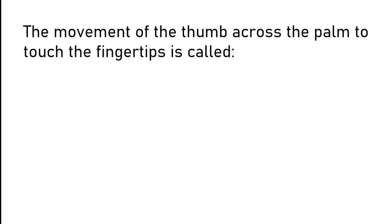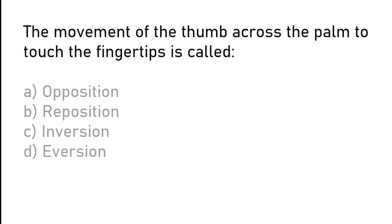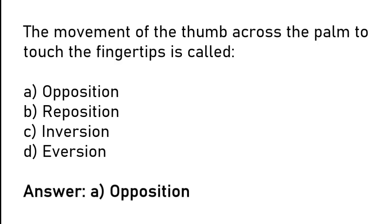The movement of the thumb across the palm to touch the fingertips is called: opposition, reposition, inversion, or eversion. The correct answer is option A: the movement of the thumb across the palm to touch the fingertips is called opposition.